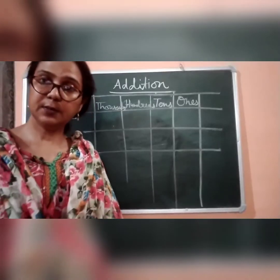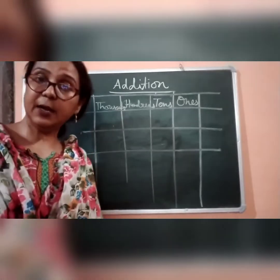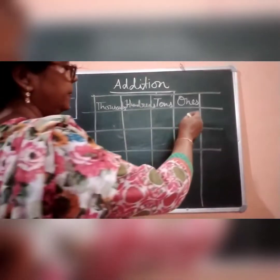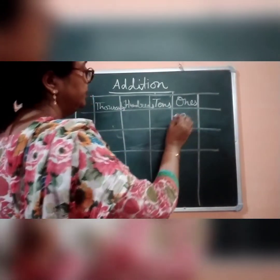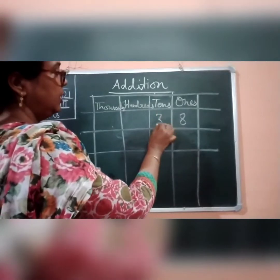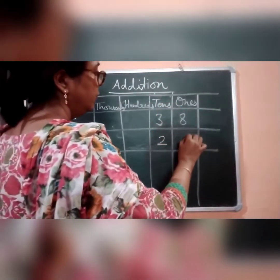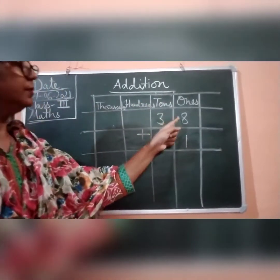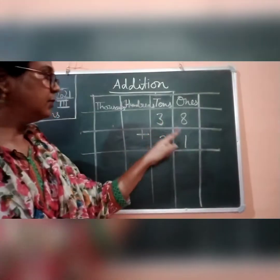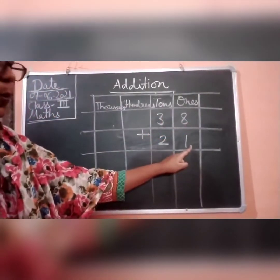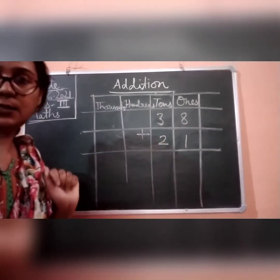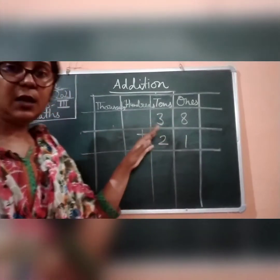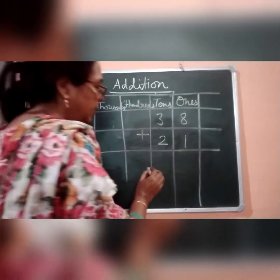Now, how can we write numbers when we are adding two or three digit numbers? For example, if we are adding 38 and 21 — that is eight ones and three tens, and one ones and two tens — so that will become 21 and 38.